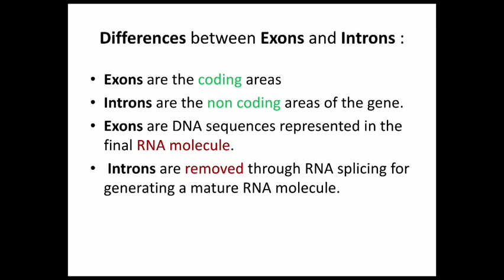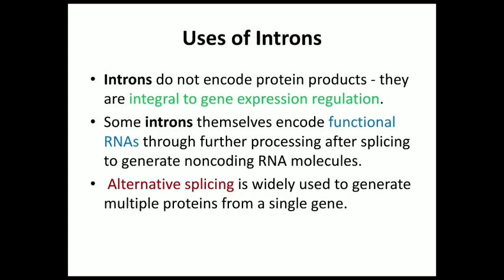Transcription is the synthesis of an RNA copy of a segment of DNA. RNA is synthesized by the enzyme called RNA polymerase. There are two parts of genes: exons and introns. Exons are the coding regions and introns are the non-coding regions. We can call introns intervening sequences and exons expressed sequences.